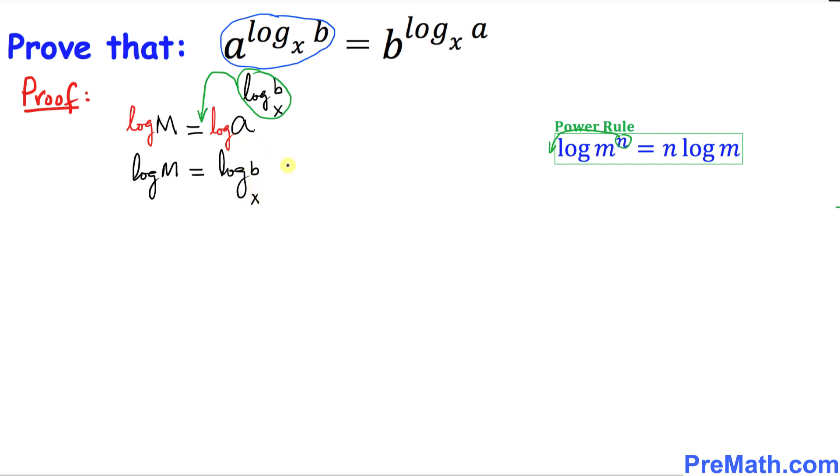Now I want you to focus on this part. We're going to use the change of base rule. This says that log base x of y can be written as log y divided by log x. So I can write this as log b divided by log x times log of a. And we have log of M on the other side.